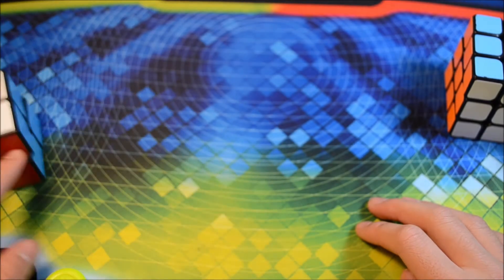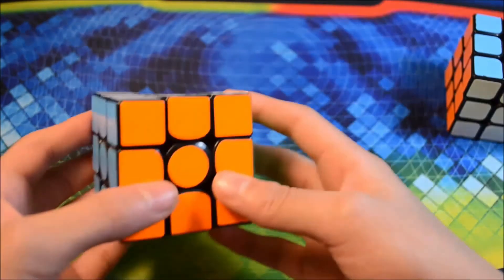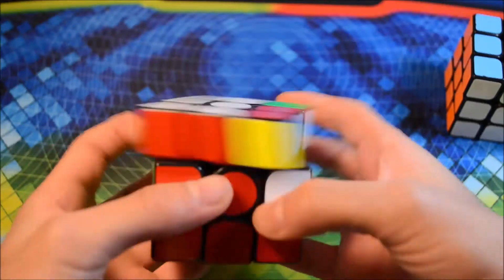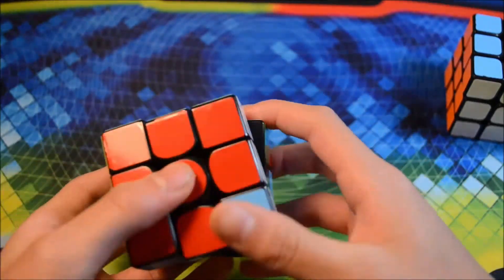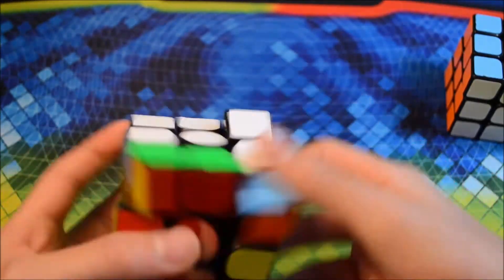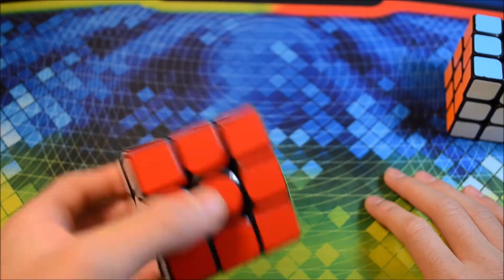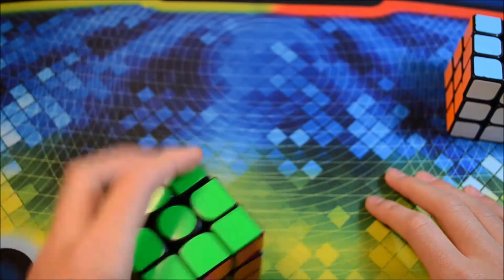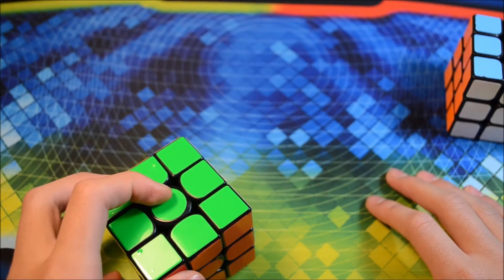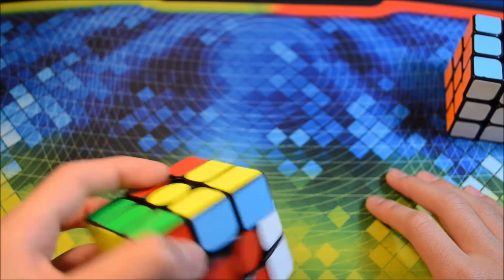For 3x3, I'll be using this newly re-stickered Gans Air. It's pretty cool and overall a really good cube. And what I'm hoping for is just a PB average, which would be a sub-15 average. That'd be pretty good.